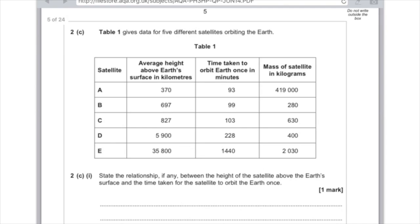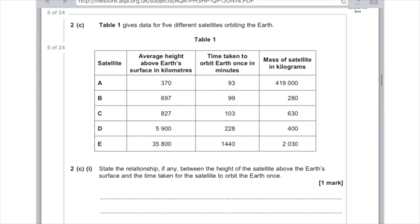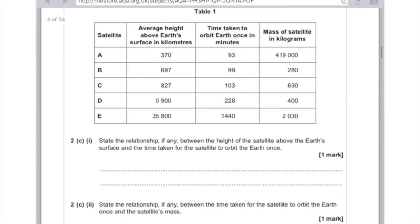2c. Table 1 gives data for five different satellites orbiting the Earth. Here we've got satellites at a low height and ones at a high height. State the relationship, if any, between the height of the satellites above the Earth's surface and the time taken for the satellite to orbit the Earth once. Right, so again, you're saying what you see here. You need to say that the higher the satellite, the longer it takes for the satellite to orbit the Earth once.